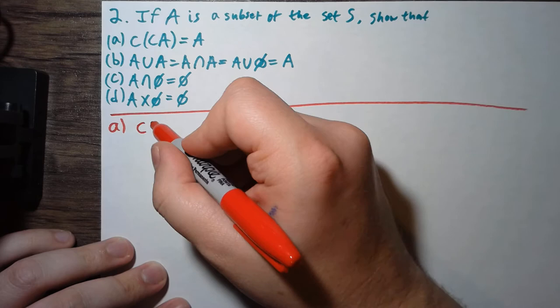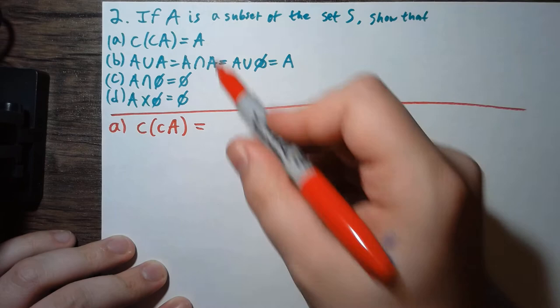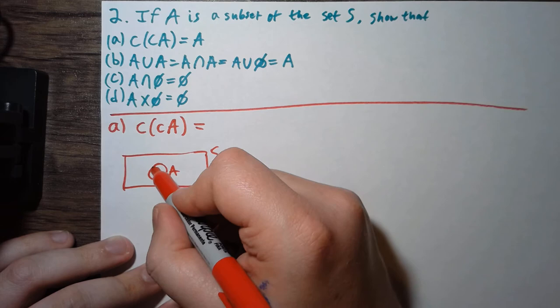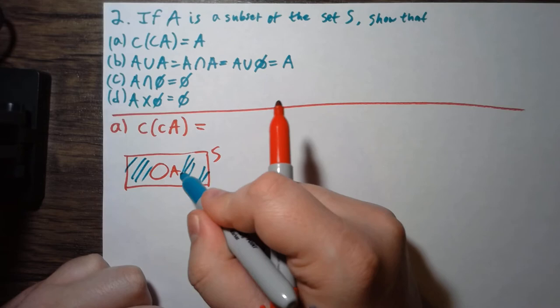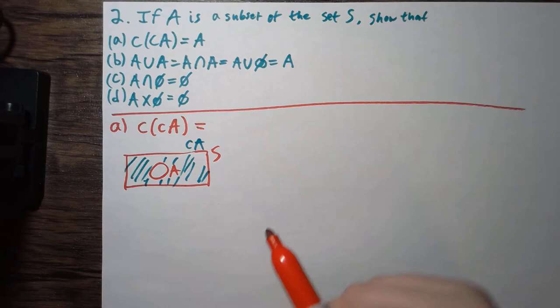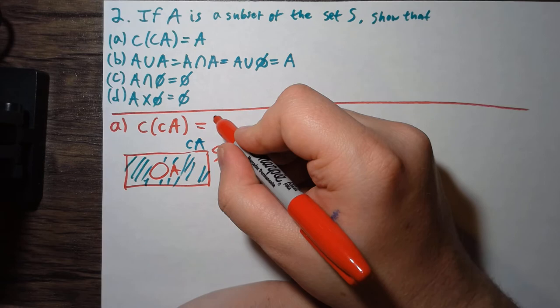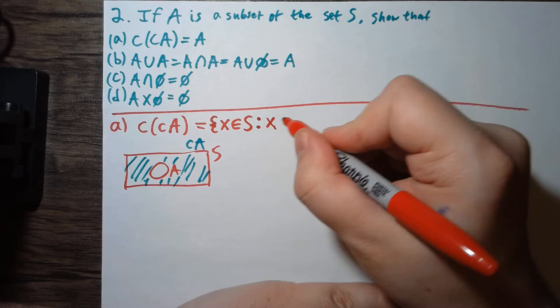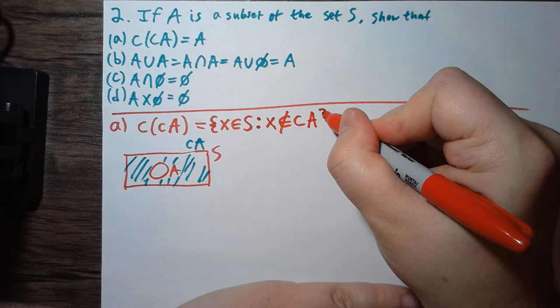So, what is the complement of the complement of A? Well, if we think of this as a Venn diagram, if this is S and A is a subset, then the complement of A is everything outside of A within S. And the complement of the complement of A would be everything that's not in that complement region, which is exactly A.